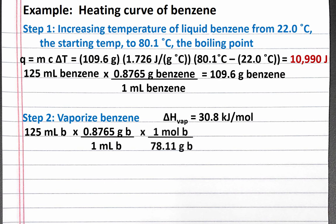Then from grams to moles benzene using the molar mass given in the problem. Then we convert from moles benzene to kilojoules using the enthalpy of vaporization. Completing the calculation, we get 43.20 kilojoules.